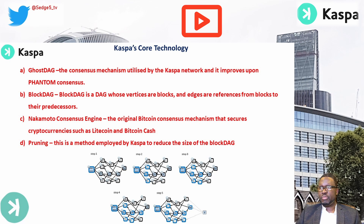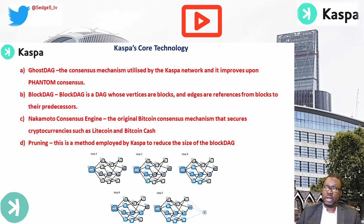The third core technology is the Nakamoto Consensus Engine — named after the creator of Bitcoin, Satoshi Nakamoto — which is the original Bitcoin consensus mechanism that secures cryptocurrencies such as Litecoin and Bitcoin Cash. The fourth and final core technology is pruning, a method employed by Casper to reduce the size of the blockDAG.